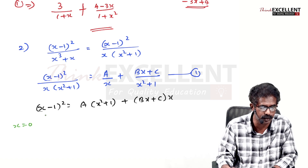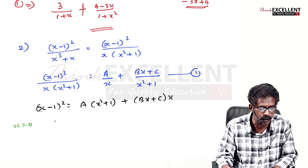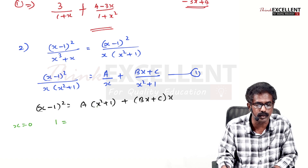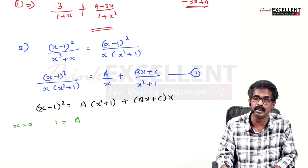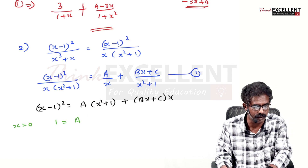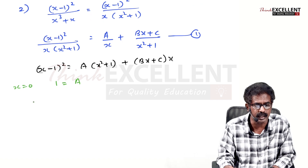There is one factor x, so put x = 0. Left side: (0-1)² = 1. Right side: A(0+1) = A, and the second term becomes 0. So A = 1.